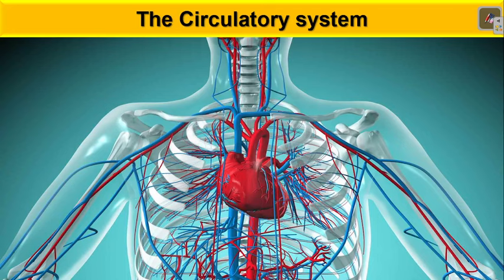Let's look at the cardiovascular system, better known as your circulatory system. Your circulatory system, just like any other system in your body, is made up of a couple of organs and tissues that work together to perform a particular function.